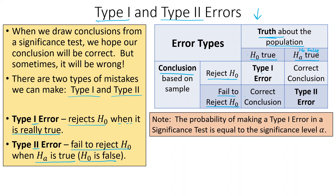If the null hypothesis is true, we don't want to reject it. Now, if the alternative is true and we reject the null hypothesis, we've done the correct thing. But if the alternative is true and we've failed to reject the null hypothesis — our sample just wasn't the right sample to detect it — that's called a Type 2 error.